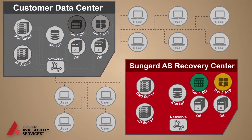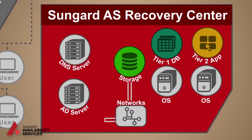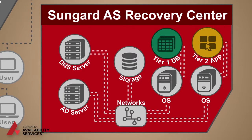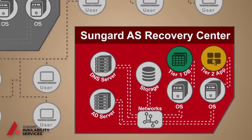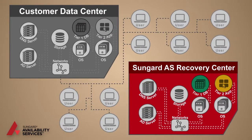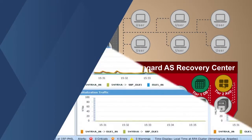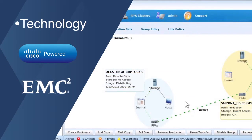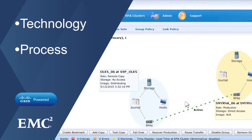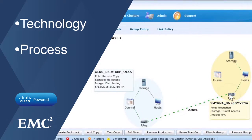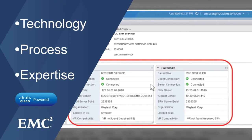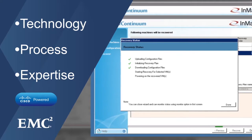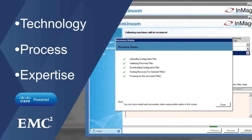In the event of a disaster, the SunGuard AS Recovery Center is activated in the right sequence with the right data in a failover process that's customized specifically for your business. By using the appropriate disaster recovery technologies from our best-of-breed technology partners such as Cisco and EMC, processes that integrate these technologies, and SunGuard AS recovery expertise, with 35 years of experience on these technologies and processes, the disaster recovery failover will be successfully carried out.